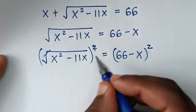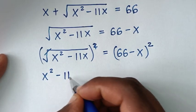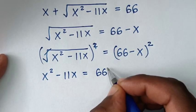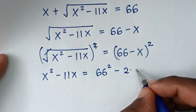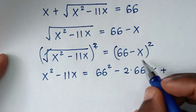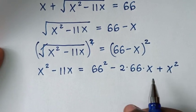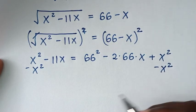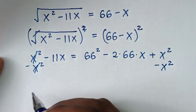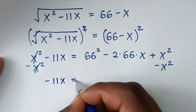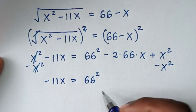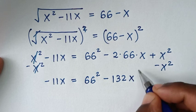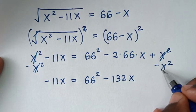The square root cancels the square on the left, giving x² minus 11x. On the right, expanding (66 − x)² gives 66² minus 2 times 66 times x plus x², which is 66² minus 132x plus x². Since x² appears on both sides, they cancel, leaving minus 11x equals 66² minus 132x.